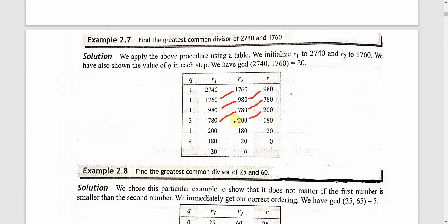Next step is to exchange the values: R2 goes to R1 and the remainder goes to R2. So R1 = 200 and R2 = 180. We find the quotient: 200 divided by 180, quotient is 1.